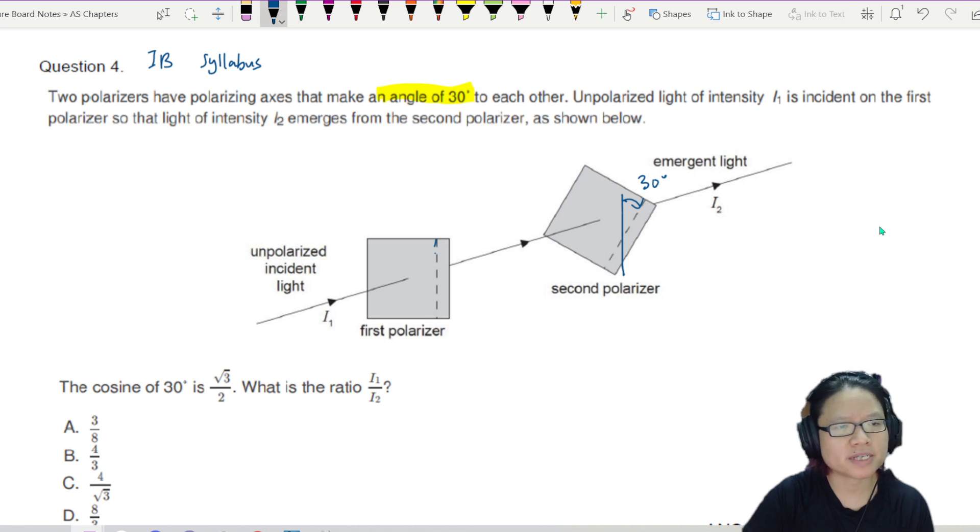So it says here that the unpolarized incident light of intensity I1 is going inside here. And the light of intensity I2 emerges from the second polarizer. Cosine 30 is root 3 over 2, much helpful. So we're probably going to use cos 30 equals root 3 over 2. Be aware that this is the IB syllabus. Normally for CIE, they just expect you to press calculator. So what is the ratio of I1 to I2?